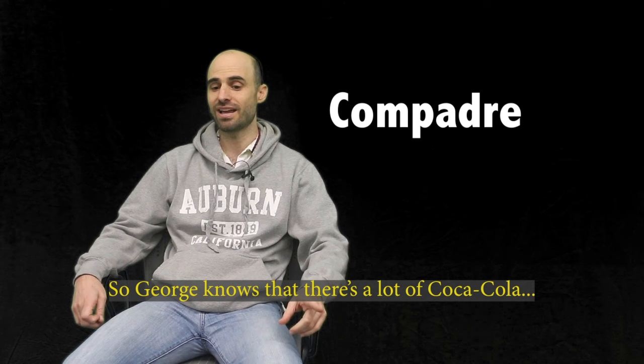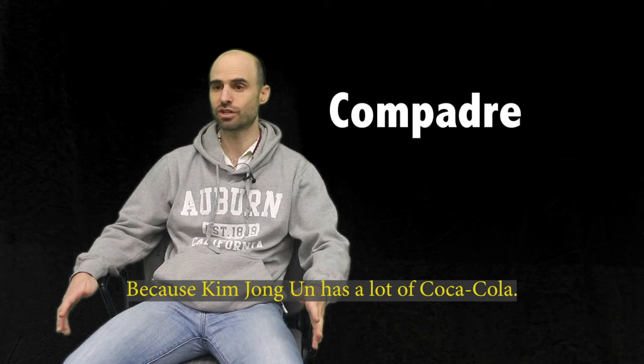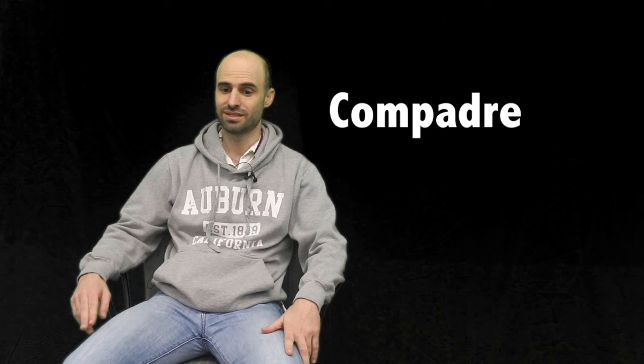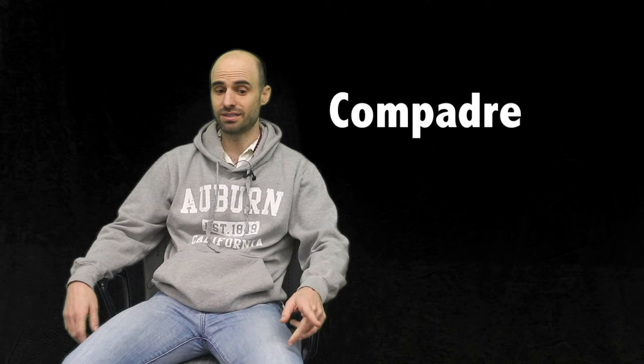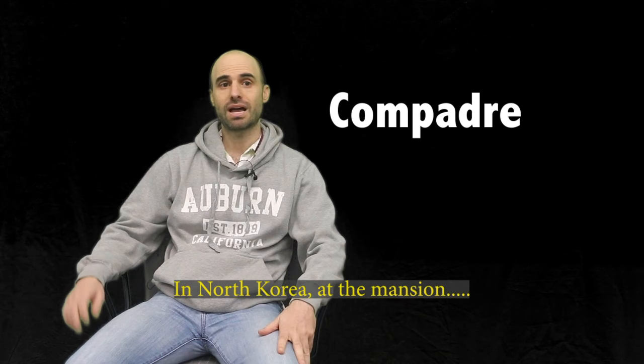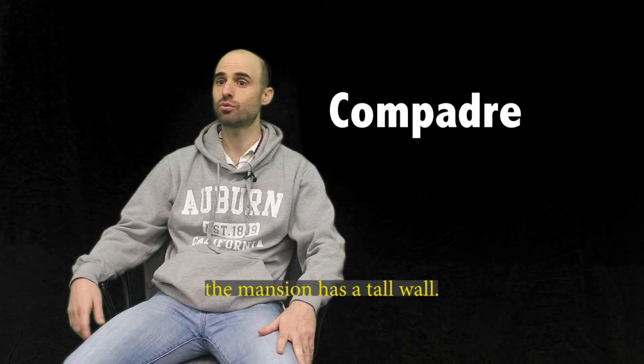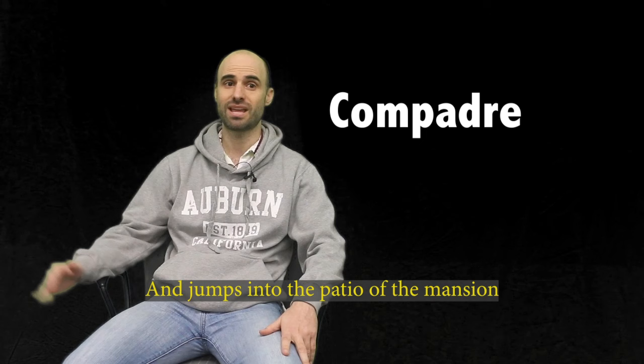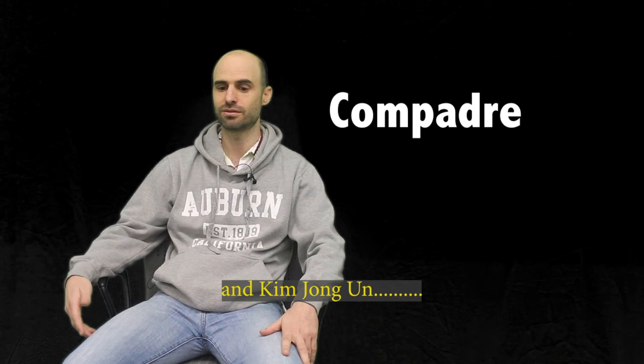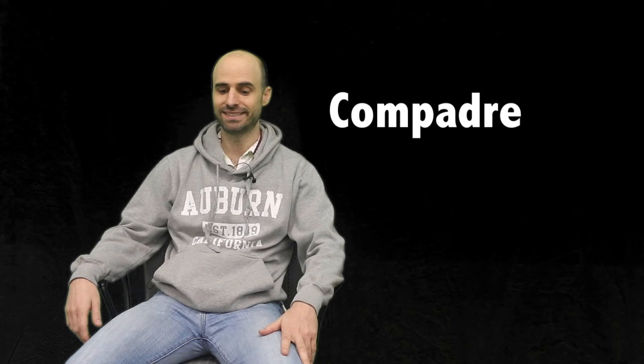Así que George sabe que hay mucha Coca-Cola en Corea del Norte porque Kim Jong-un tiene mucha Coca-Cola. Así que George va a Corea del Norte, camina a Los Ángeles, luego camina sobre el agua a Corea del Norte. Camina sobre el agua porque es un santo. En Corea del Norte, a la mansión, la mansión de Kim Jong-un tiene una muralla alta. George escala la muralla y salta en el patio de la mansión. Pero hay un problema. Hay muchos animales que defienden la mansión de Kim Jong-un, Corea del Norte y la Coca-Cola.